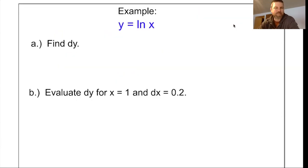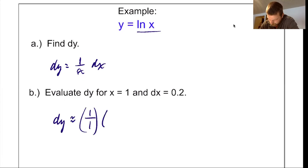All right, you might want to try this one just to make sure you got it down. Pause the video, give it a shot, but here I'll do this quick. dy would be the derivative, so 1 over x times dx. Done. Evaluate dy for x equals 1 and dx equal to 0.2. Easy enough. dy is approximately 1 over 1 times 0.2, which is just 0.2. Quick and easy.